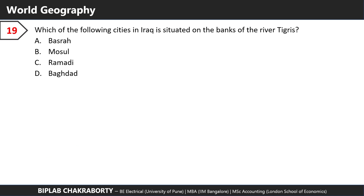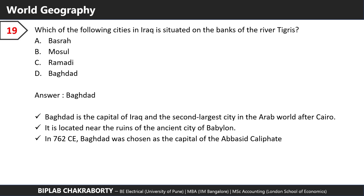Which of the following cities in Iraq is situated on the banks of the River Tigris? The answer is Baghdad. Baghdad is the capital of Iraq and the second largest city in the Arab world after Cairo. It's located near the ruins of the ancient city of Babylon.